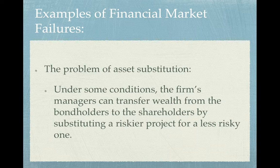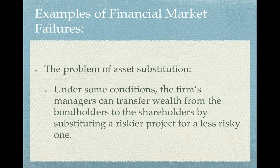The third example comes from the problem of agency: firm managers can transfer wealth from bondholders to shareholders by substituting a riskier project for a less risky one. A riskier project has higher return; a less risky one has lower but more guaranteed return, which bondholders prefer since they want guaranteed payments. Shareholders prefer the riskier project. Managers can transfer wealth between these groups by substituting projects — this is called the problem of asset substitution. As we go ahead, we will discuss these problems and how they can be resolved, and look at how they lead to financial market failures.